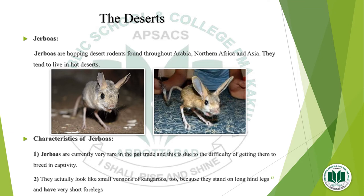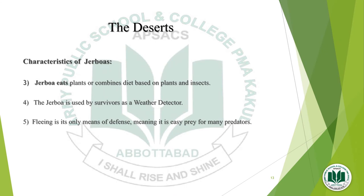Here you can see the picture of jerboas. Jerboas are hopping desert rodents found throughout Arabia, Northern Africa, and Asia. They tend to live in hot deserts. Jerboas are currently very rare in the pet trade due to the difficulty of getting them to breed in captivity. They look like small versions of kangaroos because they stand on long hind legs and have very short front legs. Jerboas eat plants or a combined diet based on plants and insects, and fleeing is their only means of defense, making them easy prey for many predators.